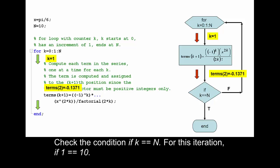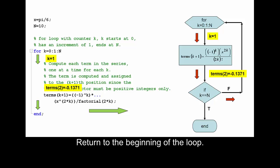Check the condition if k == n. For this iteration, if 1 == 10, the condition is found to be false. Return to the beginning of the loop.